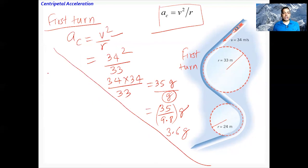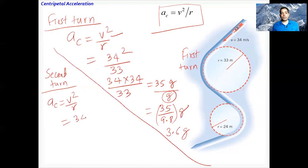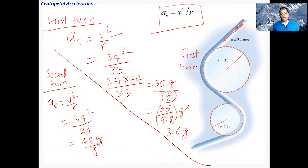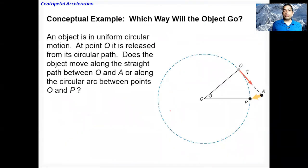For the second turn, radius = 24 m: a_c = v²/r = 34² / 24 = 48 m/s². Dividing by g: 48 / 9.8 = 4.9g. So the smaller radius gives a larger centripetal acceleration, as expected.